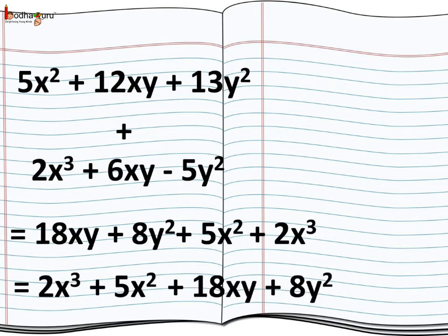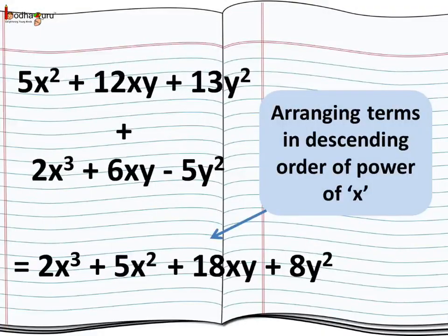Now we need to arrange the terms. Generally, polynomials are written in descending order of powers of any variable. And we start with the term with highest power. And then we move on to the next lower power of that variable and so on. So we'll write the term with x³ first. Then x² followed by term with xy. As in this term the power of x is 1. And lastly y² term as it doesn't have the x variable. And hence it should be the last. Thus we get 2x³ + 5x² + 18xy + 8y².